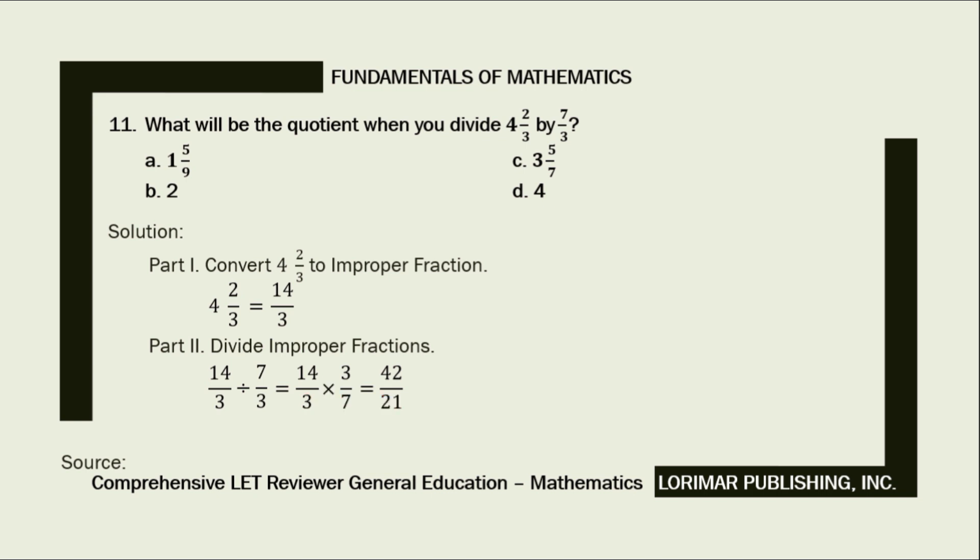Putting together our numerator and denominator, our answer becomes 42 over 21. Lastly, let's simplify our answer. 42 divided by 21 equals 2. The correct answer is letter B, 2.